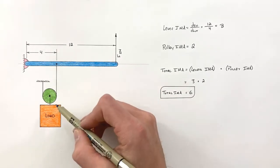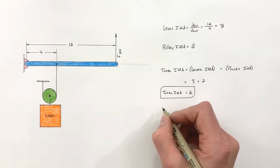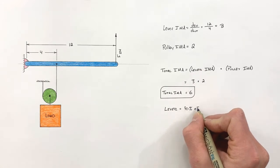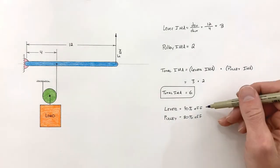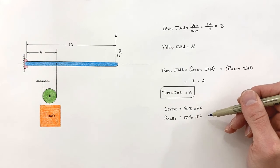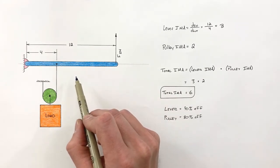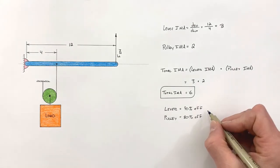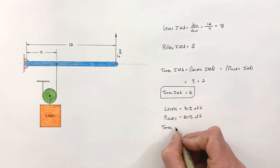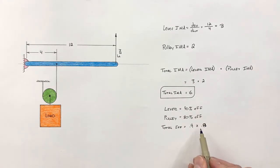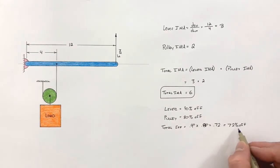What happens if this entire machine is not 100% efficient? Let's say the lever is only 90% efficient and the pulley is 80% efficient. Knowing the efficiency of each individual simple machine, we can find the total efficiency of the entire compound machine. To find the overall efficiency, we simply multiply together these two efficiencies — entering them as decimals, not percents — and we find our total efficiency is 72%.